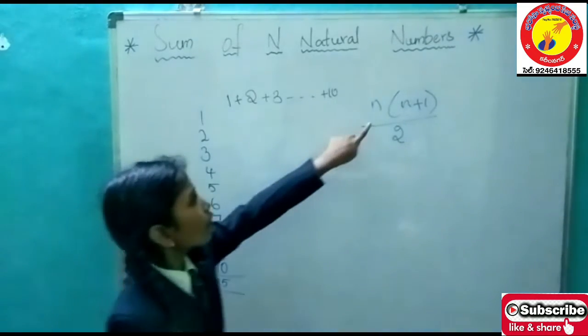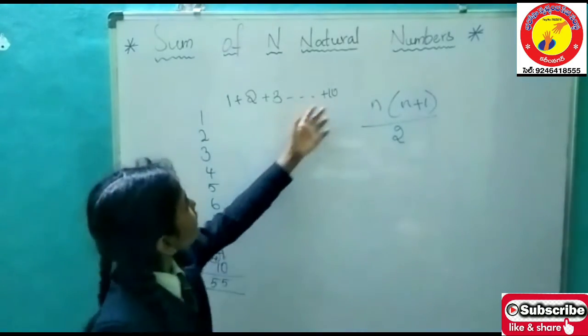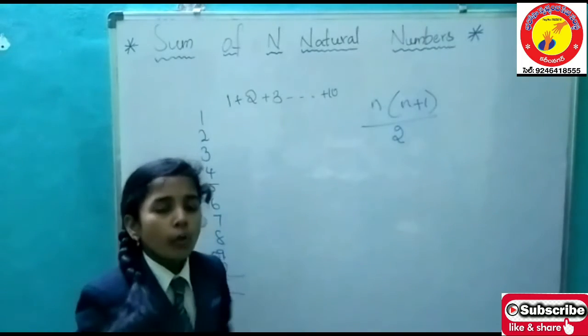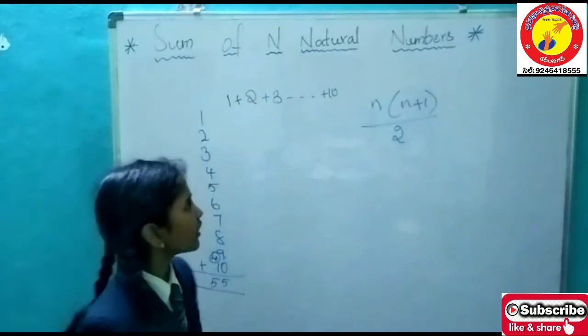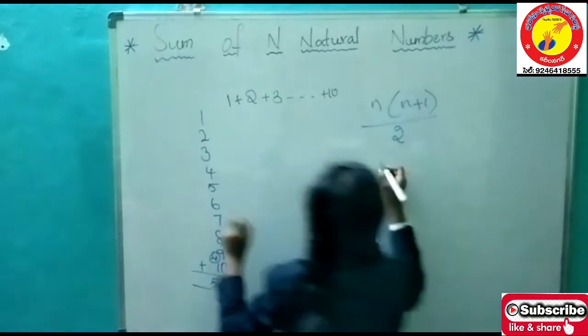So here, what is n? N is nothing but the last number we take in the question or which we observe. So here, the last number is 10.